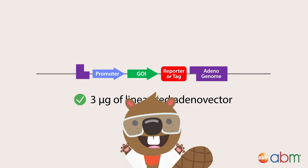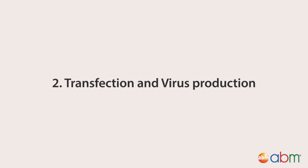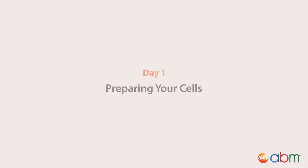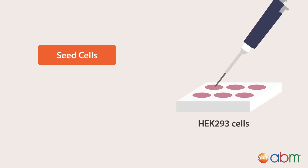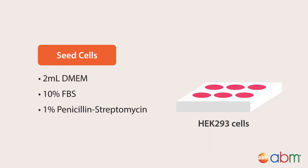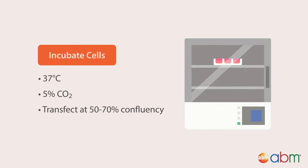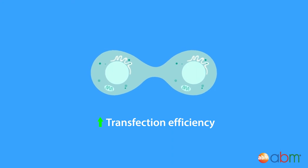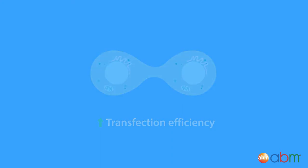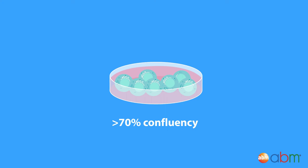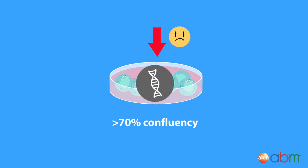Now we are ready for transfection and virus production. Seed low-passage HEK-293 cells in 6-well plates with 2 ml of DMEM, 10% FBS, and 1% penicillin-streptomycin. Incubate at 37 degrees Celsius, 5% CO2, so that they will be 50–70% confluent at the time of transfection. Transfection efficiency is highest in actively dividing cells; therefore, transfection over 70% confluency will negatively impact the cell's ability to uptake DNA.